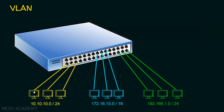If a device in one VLAN wants to send a packet, only the other devices in that same VLAN can receive it. These three devices form one local area network and can only communicate with each other. Similarly, the blue VLAN devices communicate among themselves, and the green VLAN devices among themselves. If 10.10.10.1 sends a broadcast, only that VLAN will receive it — the broadcast message of the yellow VLAN will not disrupt the blue VLAN or green VLAN.